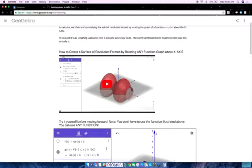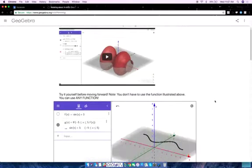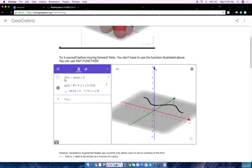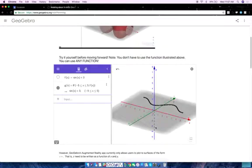So right here, you have a picture of the function, the piecewise function, right here. I have the function f of x equals sine x plus 3. There's the whole function. But I've restricted the domain here so that it's only going from negative 5 to 5, because right now, when GeoGebra Augmented Reality,